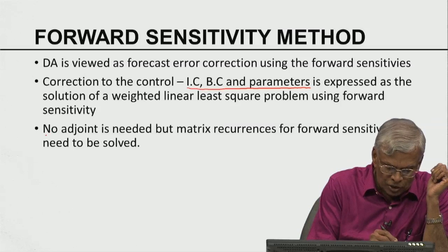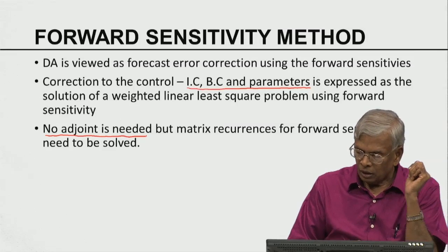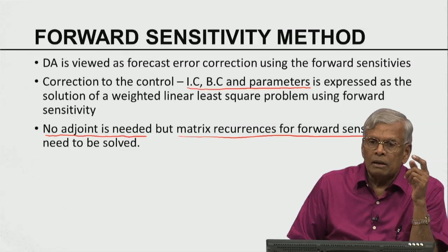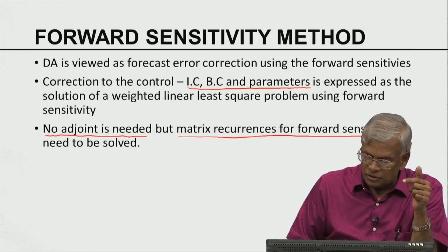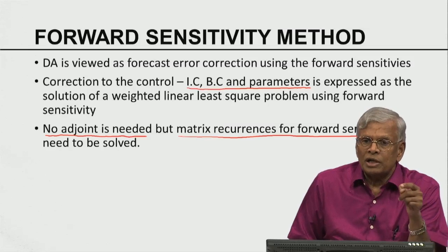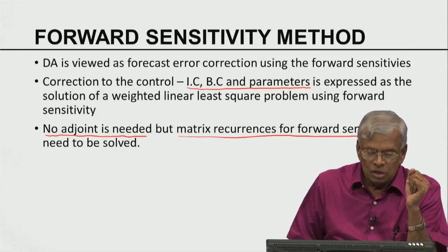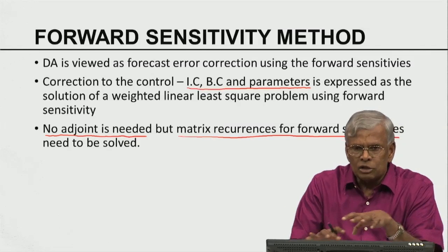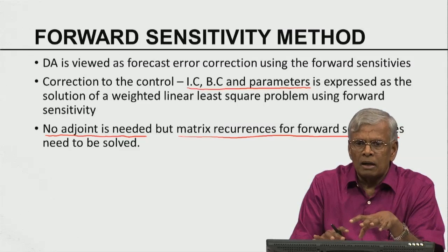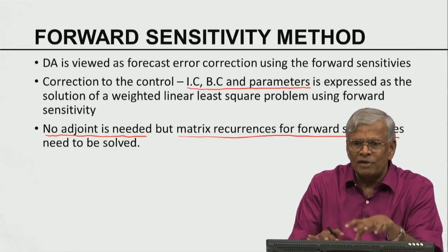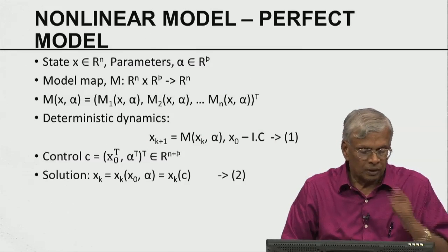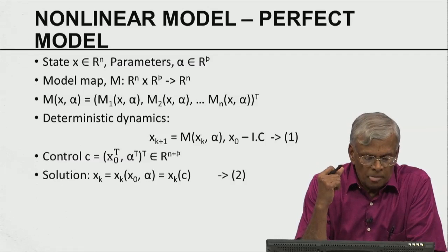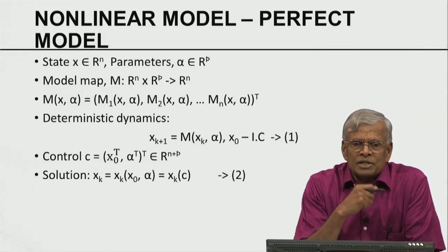We are assuming that the model is perfect. So if you start the forecast model with the wrong control — namely wrong initial condition, wrong boundary conditions, or wrong parameters — the error in the control will lead to errors in the forecast. We would like to correct the errors in the control by using observations, and formulate this as a weighted linear least-squares problem using forward sensitivity. In this method, we do not need any adjoint, but we need matrix recurrences that compute the forward sensitivities of the solution with respect to initial condition, boundary conditions, and parameters. Adjoint is not needed, meaning backward integration is not needed. Everything is forward, but we need to solve a system that describes the evolution of the forward sensitivities. We are going to start with a non-linear model, assume the model is perfect. The linear case will be a special case of this.